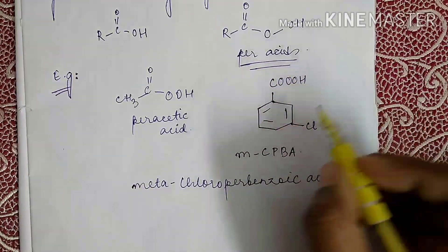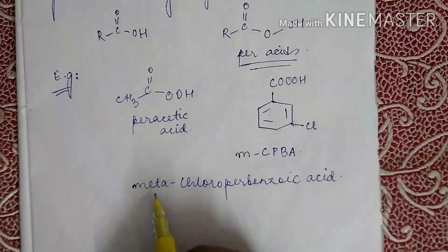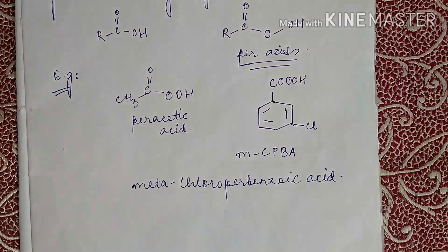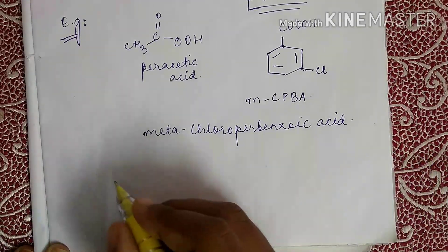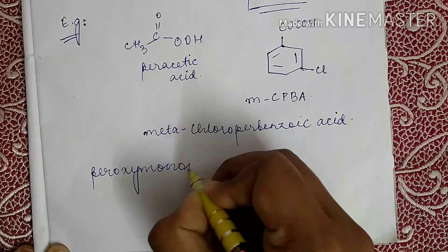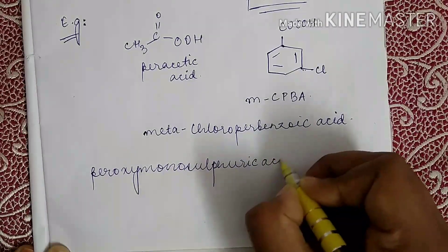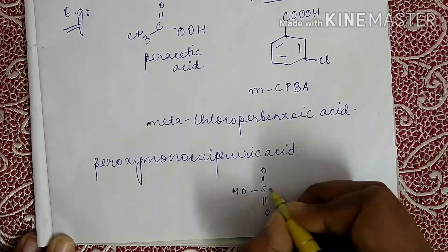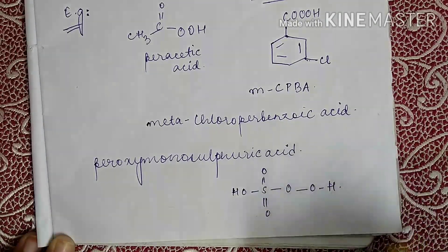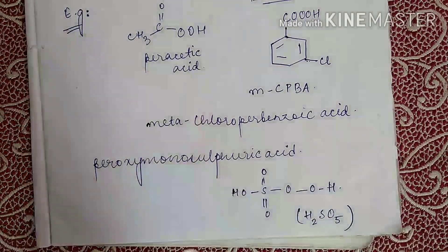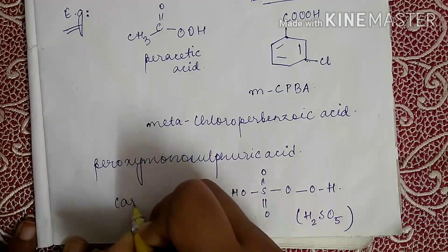This is perbenzoic acid, also called peroxybenzoic acid. The next example is peroxymonosulfuric acid, which has the structure with a double bond O and OOH group. Its general formula is H₂SO₅, and its common name is Caro's acid.